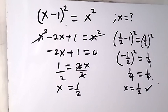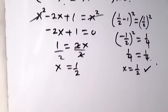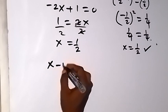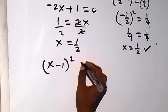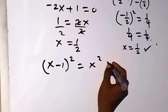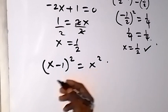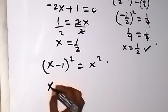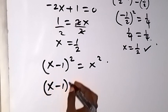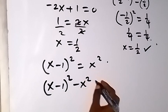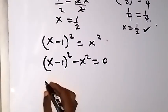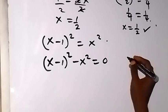Now, let's look at the other way of solving this problem. Let's look at the second way. We have x minus 1 squared equals to x squared. Here, we can bring the x squared to this side and then subtract x squared from both sides. We have x minus 1 squared minus x squared equals to zero. And when we see this, we see it in the form of difference of two squares.